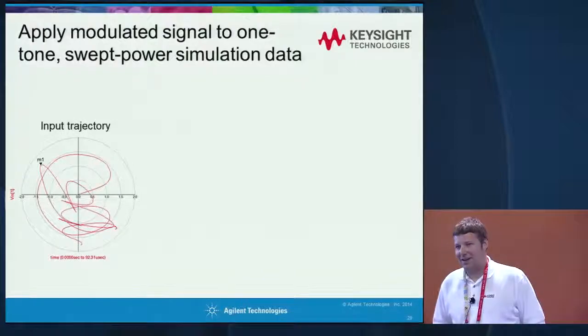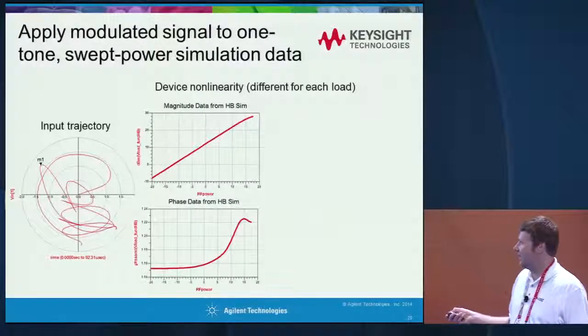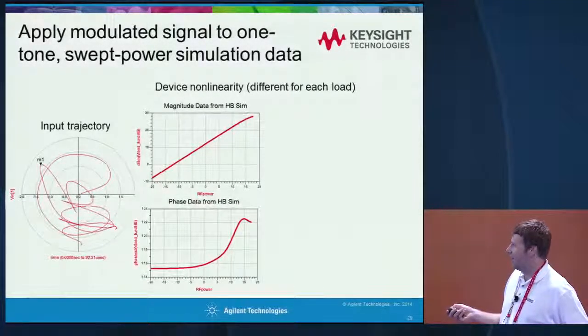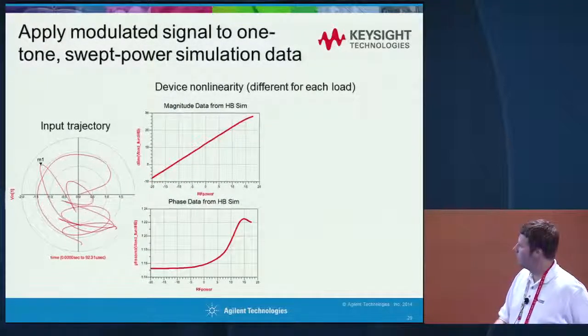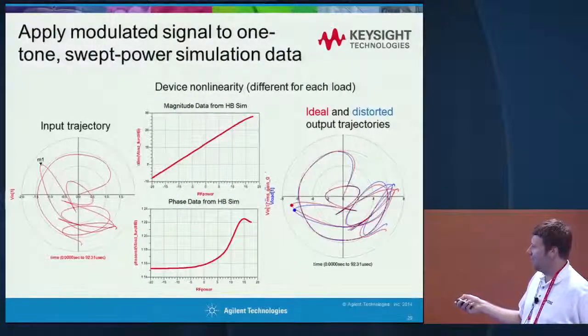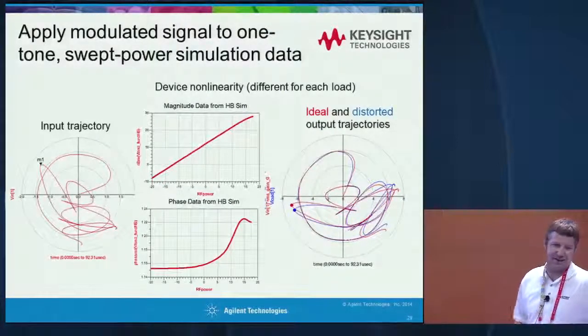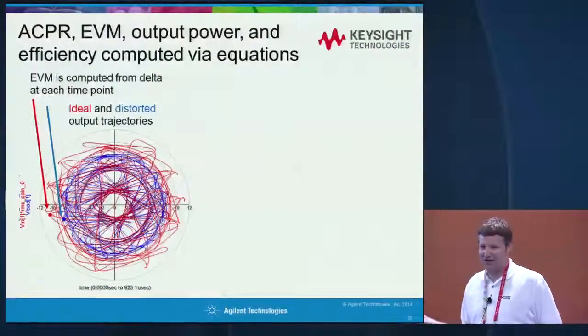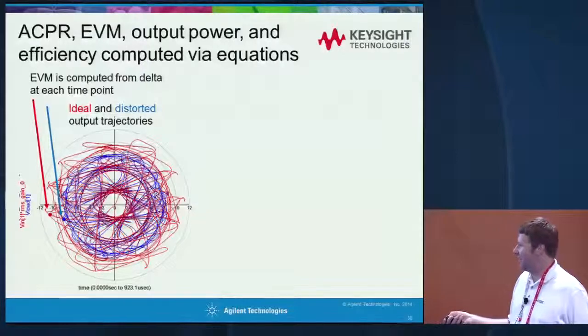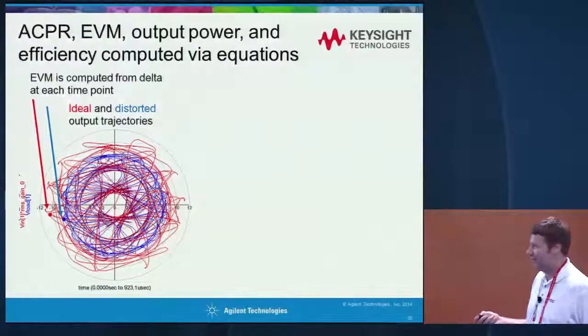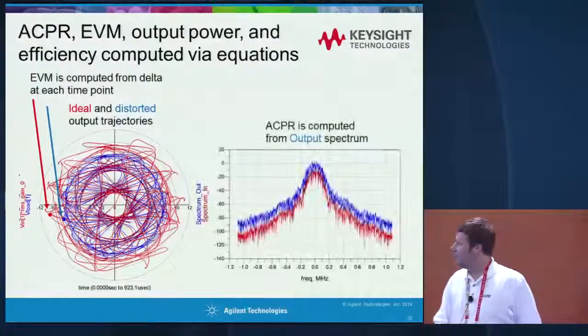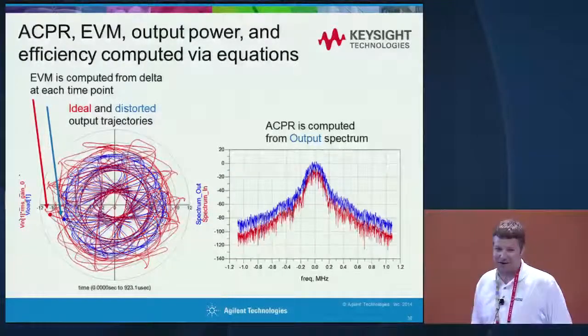Now let's talk about how we can get modulated spectral data from a one-tone simulation. We apply a complex input signal to the nonlinear AM-to-AM and AM-to-PM transfer curves of the amplifier, and we get a distorted output signal. The difference between the input reference signal and the distorted output is the error vector magnitude, and from that we can compute the output spectrum. With a more realistic modulation like wireless LAN, most of the distortion happens around the edges of the polar plot — where the amplifier is most distorted. From this it's easy to arrive at the output spectrum and look at the adjacent channel power.